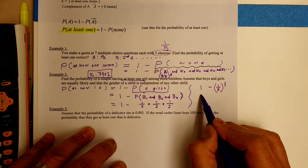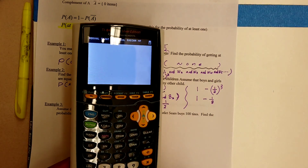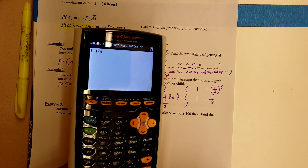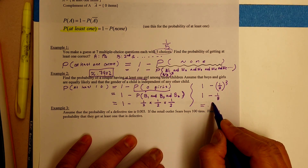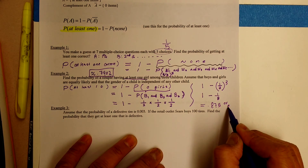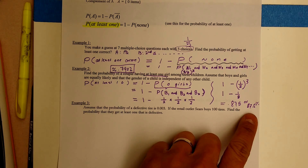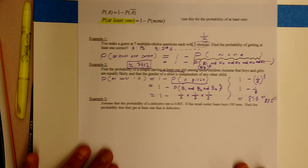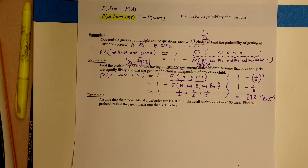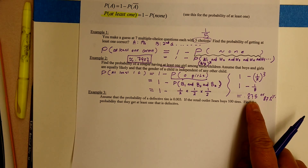That equals one minus one-eighth. So one minus one divided by eight equals 0.875, or about 87.5%. This tells us that if you have three children, there is an 87.5% chance that at least one of them is a girl. So if you want a girl, have three kids — your chances are looking pretty good. With four kids, the probability would be even higher.